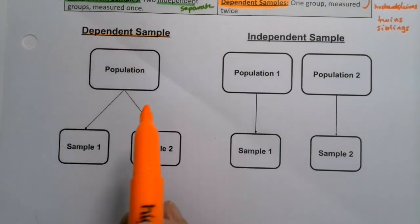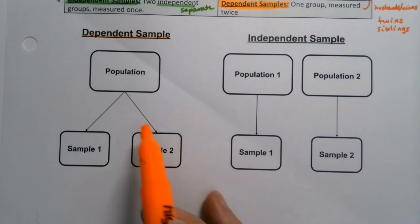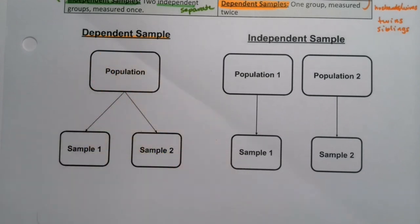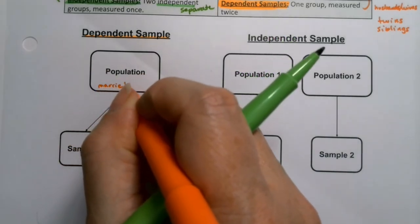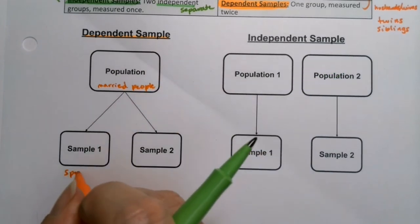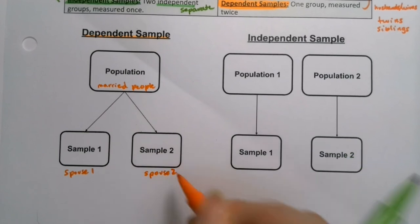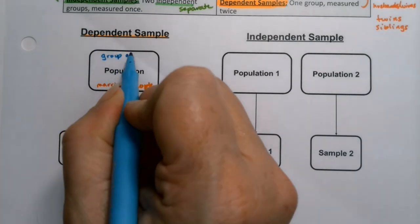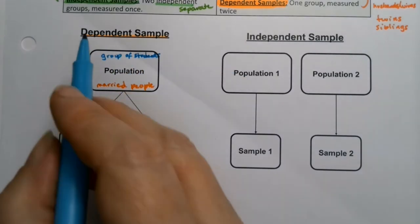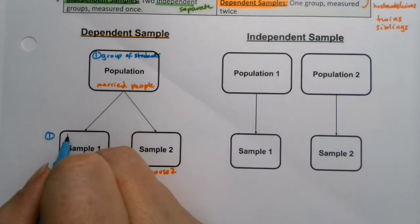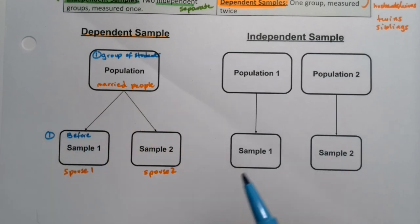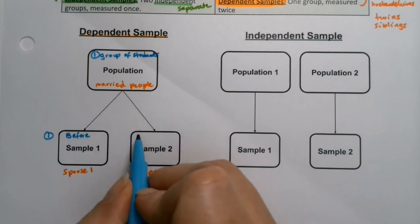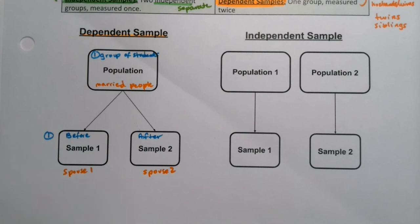A dependent sample takes two samples from one larger population. That could be the same people measured pre and post, or it could be a sample of married people — spouse one and spouse two. Another example: you could have a group of students take a test or measure their blood pressure before, have them do exercise, and then check it after. Those are a couple of examples of a dependent sample.